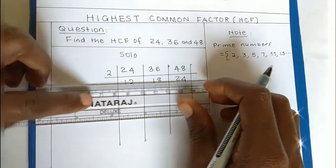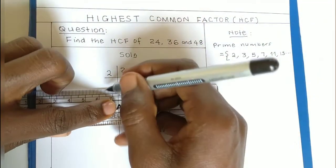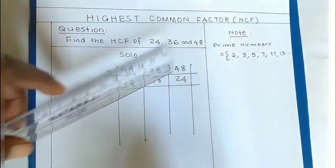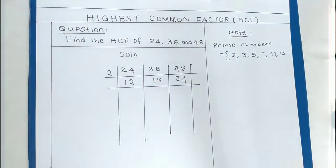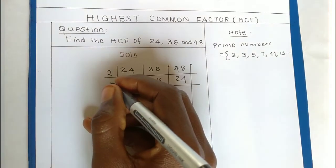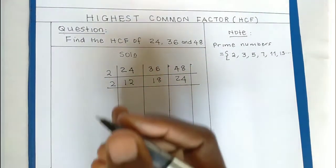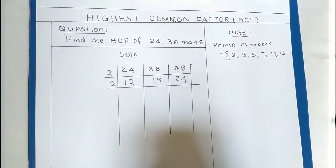Next, go and look for another common prime divider. When I check, 2 can still divide—these three numbers are still divisible by 2.